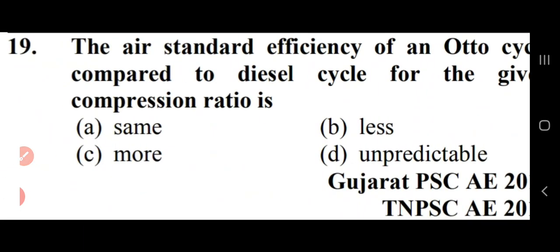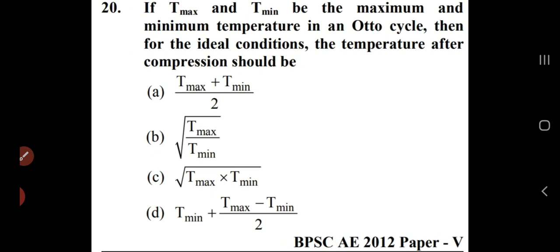The air standard efficiency of an Otto cycle compared to diesel cycle for the given compression ratio: the air efficiency of the Otto cycle is always more than that of the diesel cycle — option C is right. If T_max and T_min are the maximum and minimum temperatures in an Otto cycle, then for ideal condition the temperature after compression should be the product (geometric mean) of maximum and minimum — option C.